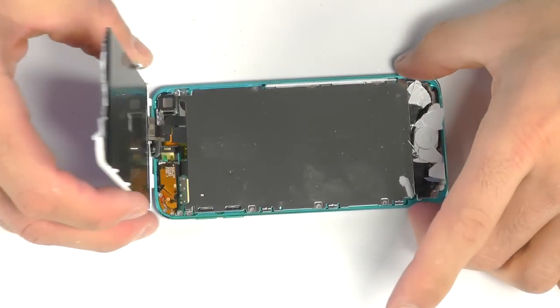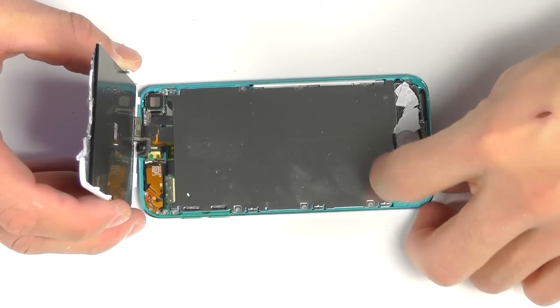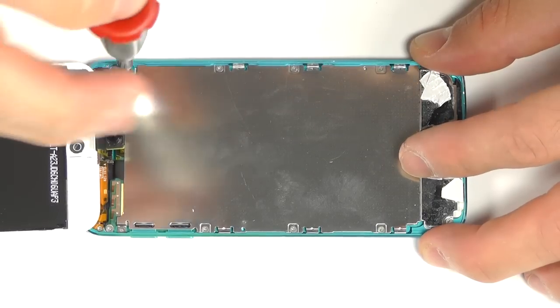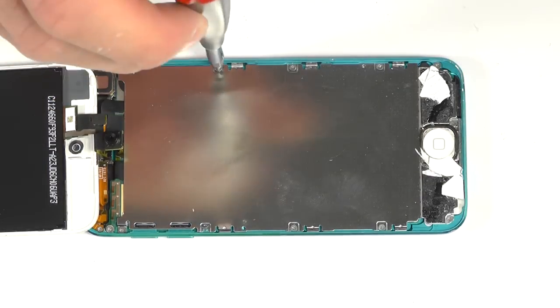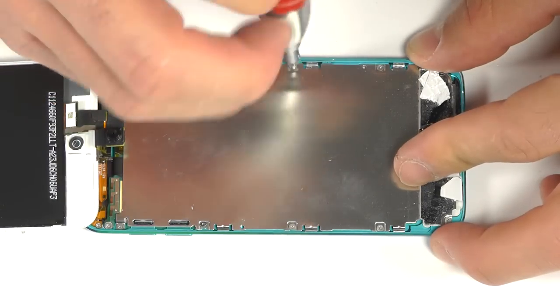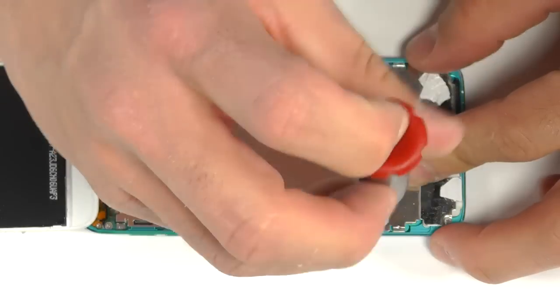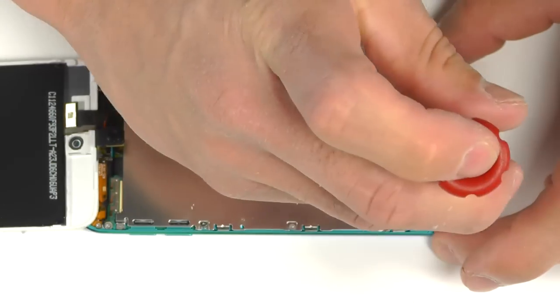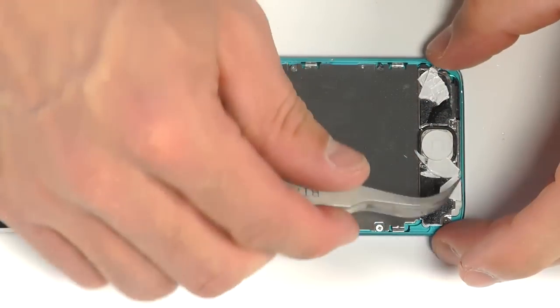With the broken display assembly completely peeled back from the iPod, it's going to reveal a metal protective plate that's covering up the motherboard. There's a total of 12 Phillips screws that need to be removed from this protective plate before removal.